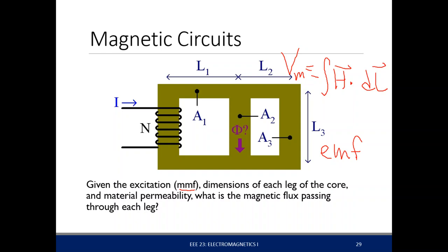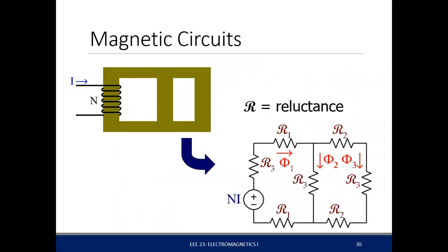Given some slab of ferromagnetic material — meaning it has a very high permeability — shaped this way, with a coil of wires around the left leg: this coil creates a magnetic field that flows around the circuit. You can actually convert this diagram or drawing into some form of a DC circuit that you have already encountered.